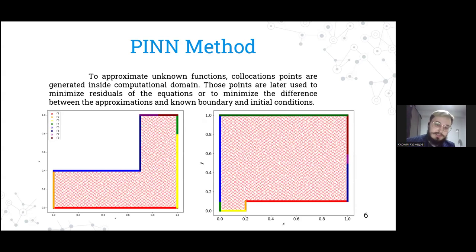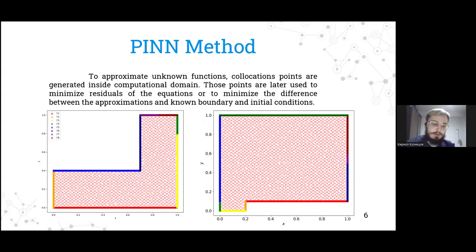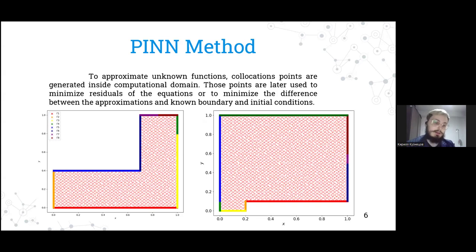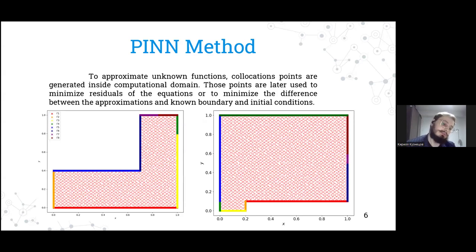We generate a dataset, and at each point of this dataset, we calculate the value of the residual of the equations or the boundary conditions — the difference between the boundary conditions and the approximation. By minimizing all these terms, we can solve the problem. This is typically the dataset structure for such problems.